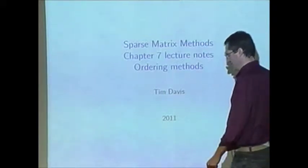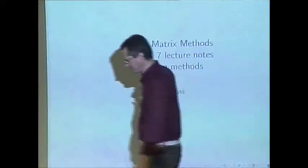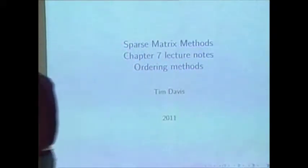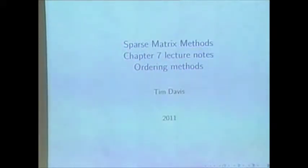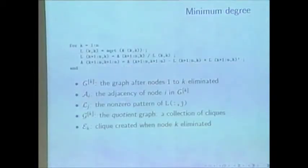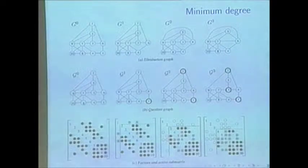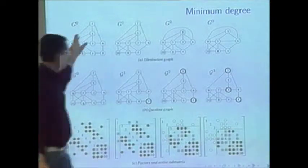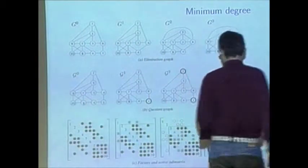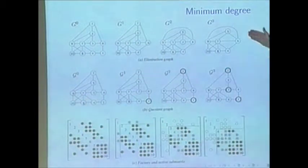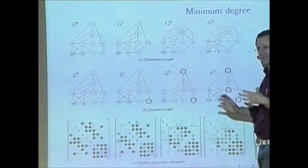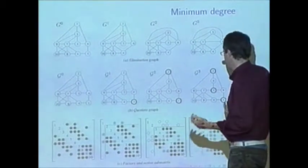Chapter 7, Ordering Methods. Here we are with the elimination graph, the quotient graph, and the matrix. All three represent the same thing. We've got this local greedy strategy.